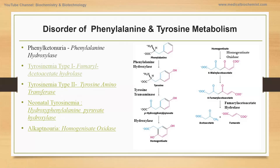Before we go on to the actual disease, let's review the metabolic pathway of tyrosine and phenylalanine metabolism. The first step is the conversion of phenylalanine to tyrosine by phenylalanine hydroxylase. Tyrosine is then converted into parahydroxyphenylpyruvate by tyrosine transaminase. Parahydroxyphenylpyruvate is converted into homogentisate by parahydroxyphenylpyruvate hydroxylase, with ring opening occurring. Malylacetoacetate is ultimately converted into acetoacetate and fumarate in two-step reactions.